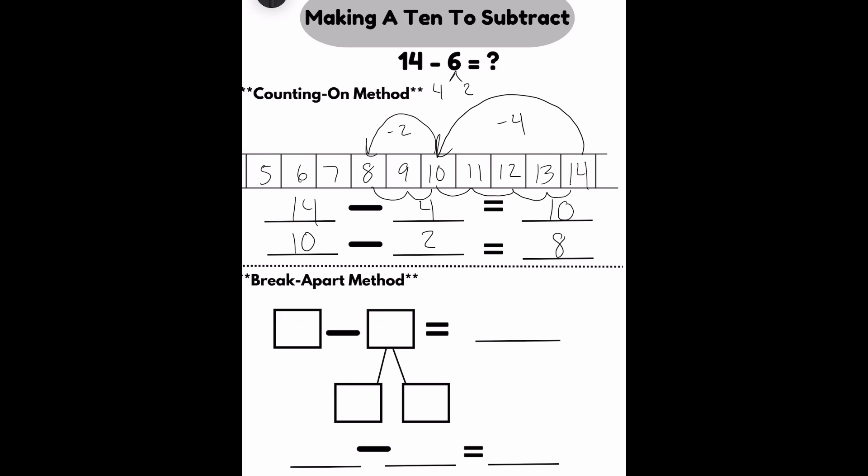Looking at the break apart method. Write the original equation on top always. I'm not going to write my answer yet. I'm going to focus on making that 10. 14 minus what makes 10? I know 14 minus 4 makes 10. Then I'm going to ask myself when I work on this number bond. 6 on top and 4 on bottom means I'm subtracting. I know that my missing number is 2. 6 minus 4 is 2.